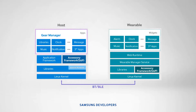On the host software, we can see the Gear Manager. It is used to install, configure, and manage gear applications on the wearable device. On the wearable architecture is the wearable manager service. The wearable manager service receives instructions from the Gear Manager, such as installing a certain gear application to the wearable device.